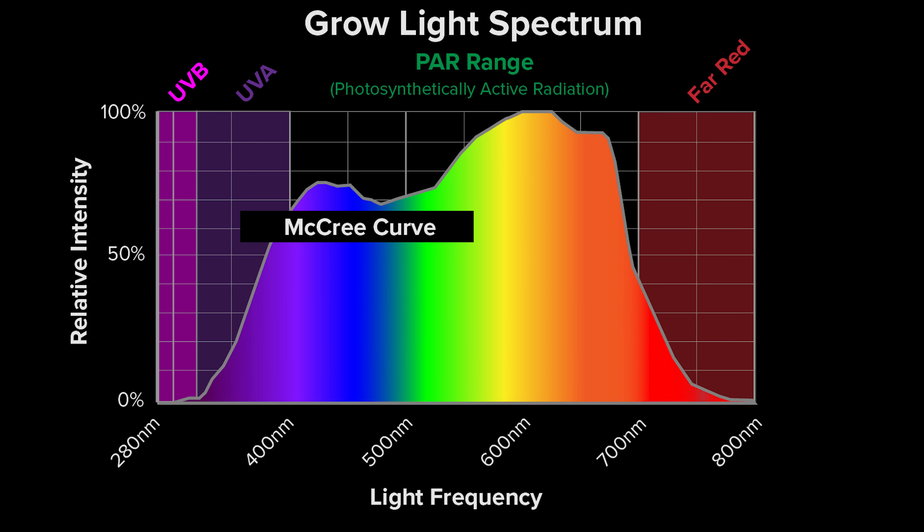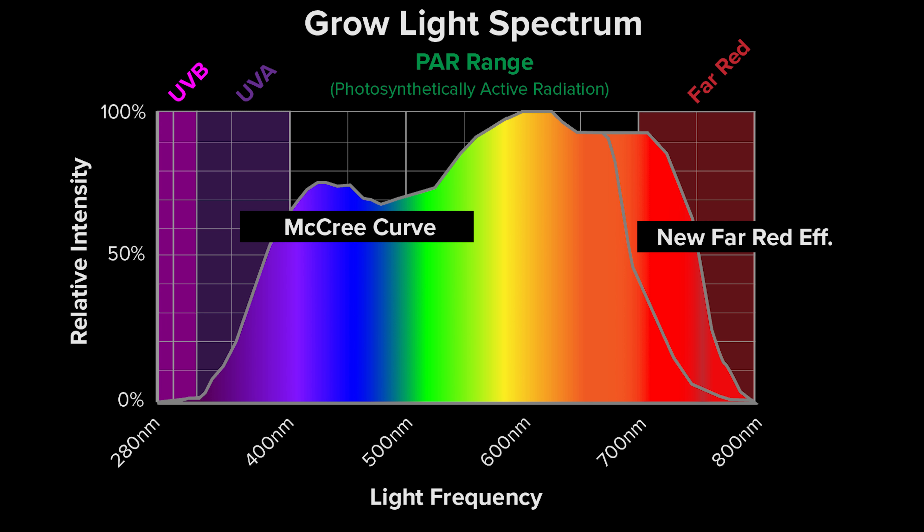It does cause photosynthesis, and it's been known right back to one of the original references for spectrum efficiency - the McCree curve. Although far red is far less effective than red, green, or blue, it is known to cause photosynthesis. More recent research, in particular by Bruce Bugbee at Utah State University, has shown there probably is greater potential for photosynthesis from far red than previously thought, though it will still be less efficient than other spectrum ranges.